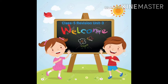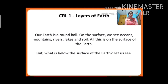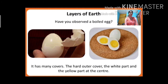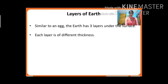So let us start our class. Layers of Earth. Our earth is a round ball. On the surface we can see oceans, mountains, rivers, lakes and soil. But what is below the surface of the earth? Have you observed a boiled egg? It has many layers. First is the hard outer cover, then the second is the white part, and the third one is the yellow part at the center.